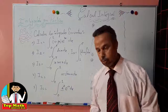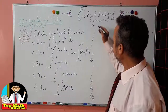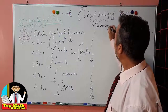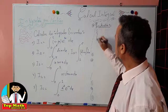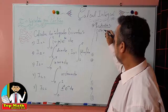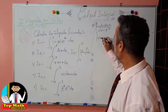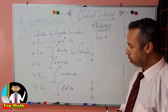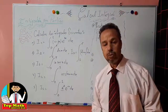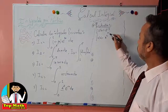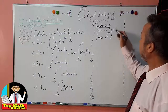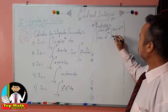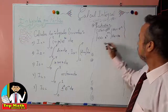For the calculation of I5: we pose u(x) equal to the polynomial, because its derivative decreases in degree. We set v'(x) equal to e^(−x), which gives u'(x) = 2x and v(x) = −e^(−x). This is our setup for the first integration by parts.